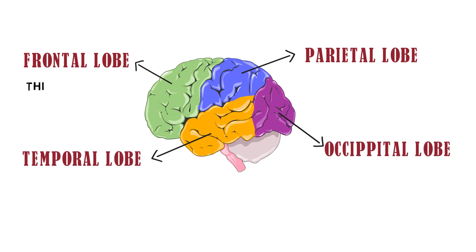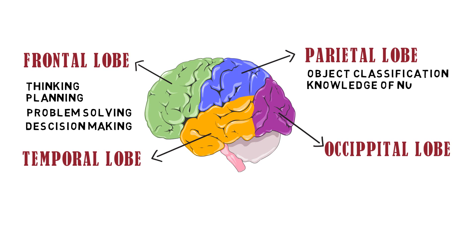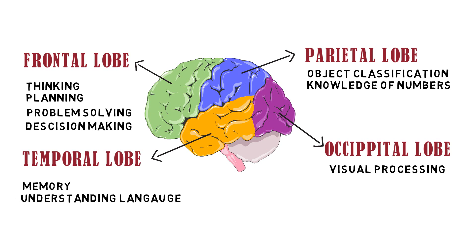The frontal lobe is involved in thinking, planning, problem solving and decision making. The parietal lobe is involved in object classification and knowledge of numbers, whereas the occipital lobe is involved only in visual processing. The temporal lobes are involved in memory, understanding language and speech.